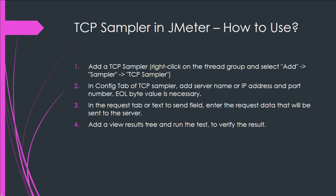In the request tab of the TCP sampler, we need to enter the request data that will be sent to the server. This will vary depending on the custom protocol being used. For example, we might send a command string followed by a newline character.